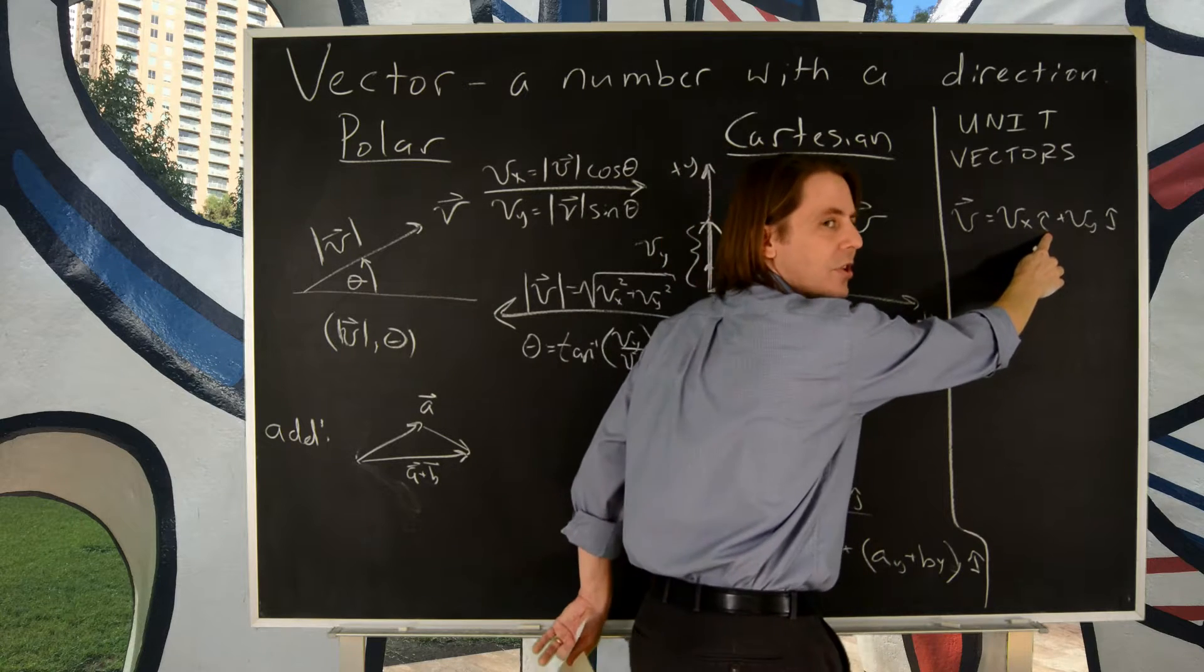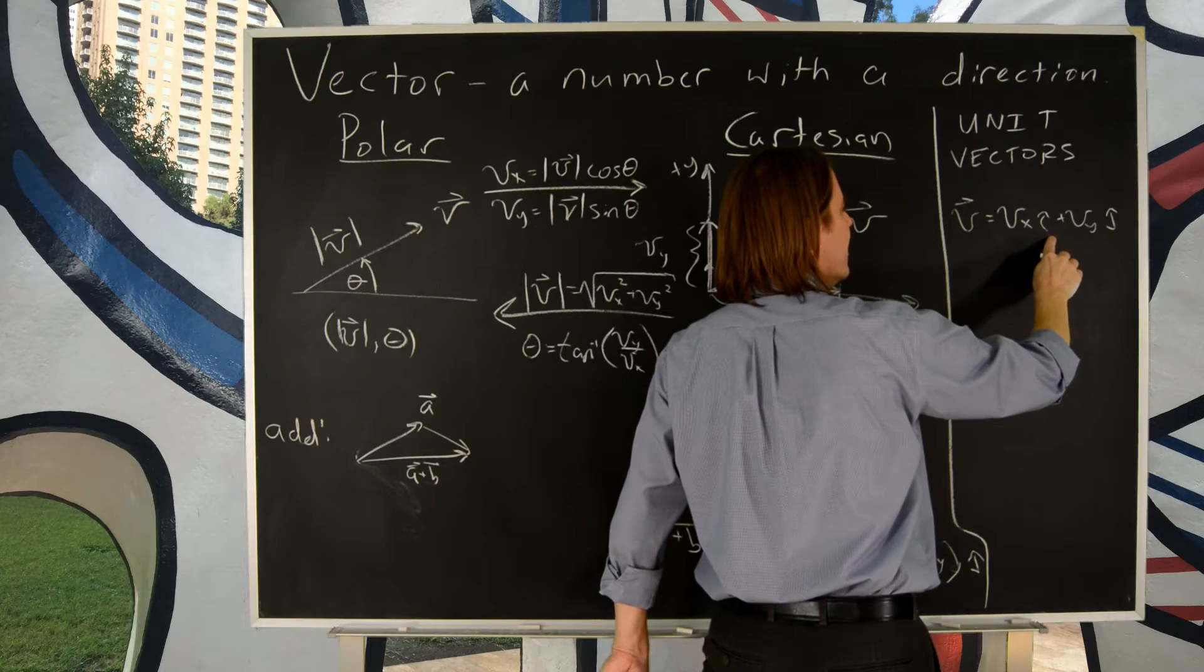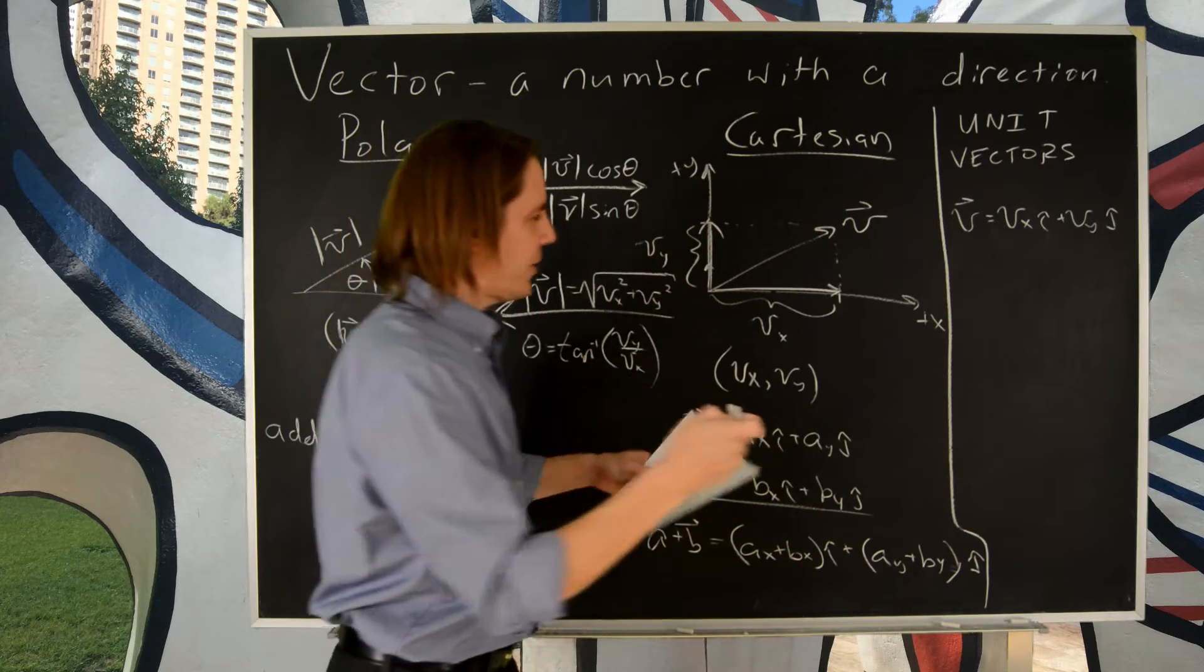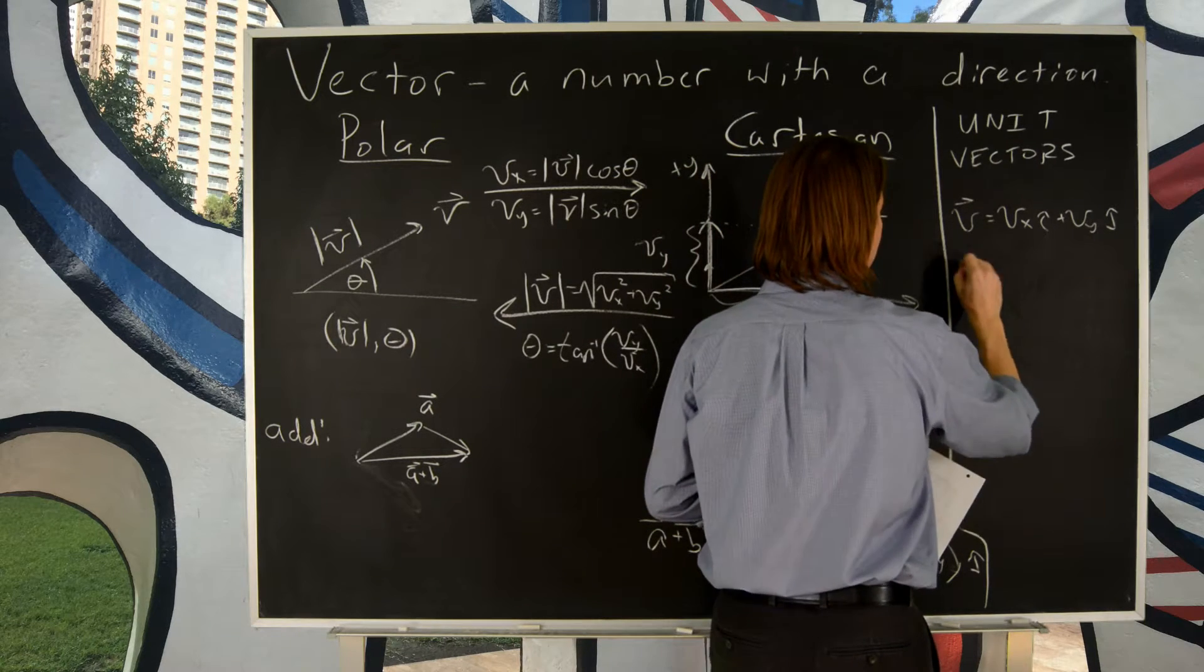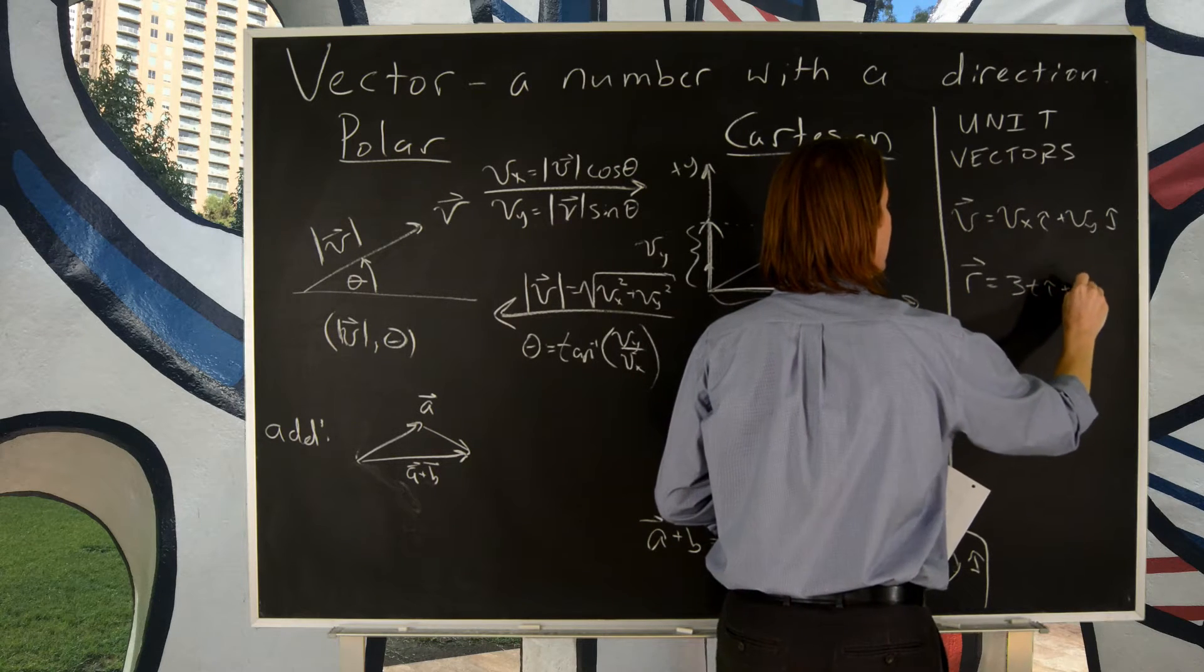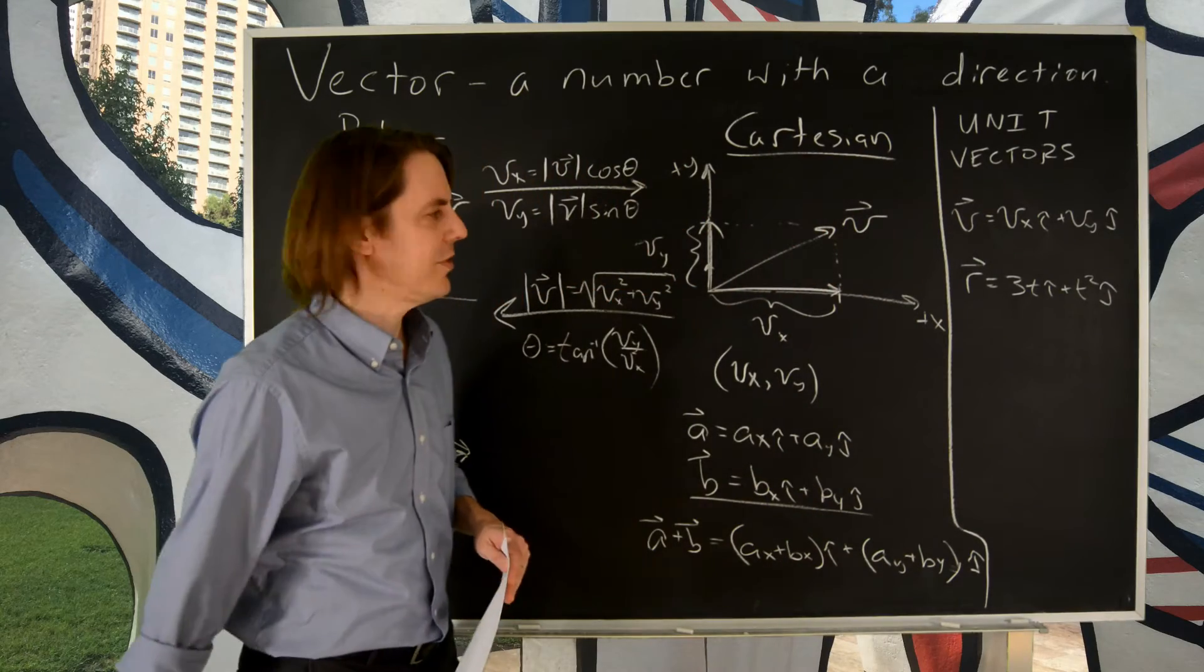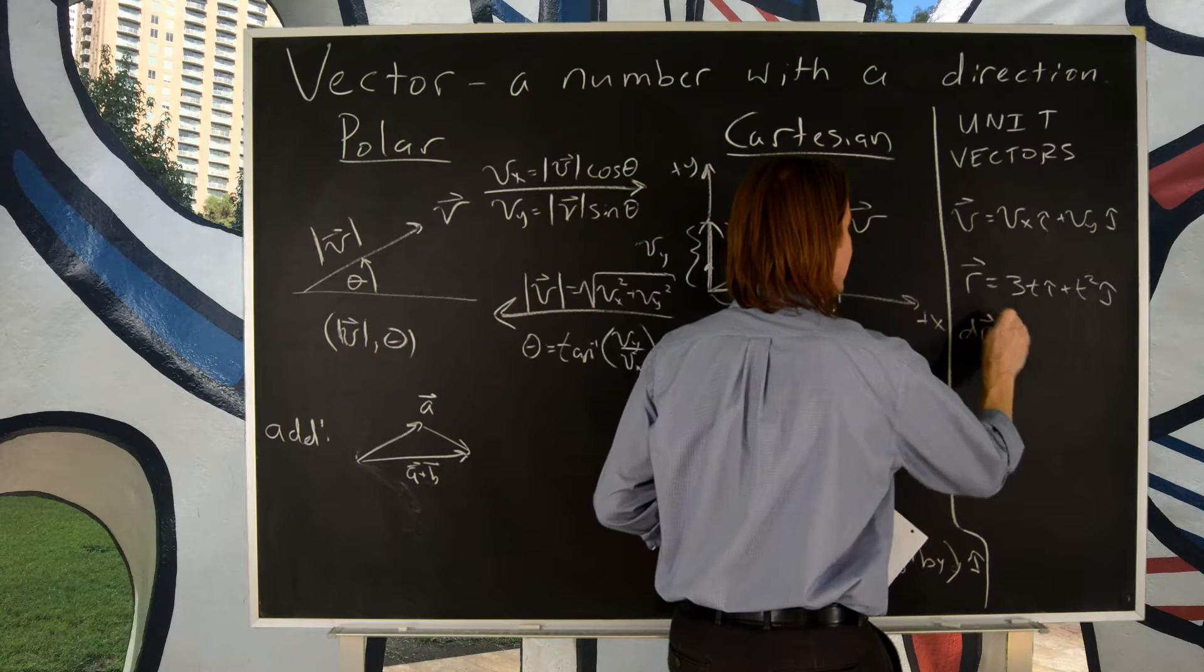Often when we write something as a constant, we like to put it out front. But unit vectors, we usually put in the back. Okay? So if, say, I had the vector, or let's say R, we usually think of a position vector like that. R is 3T i hat plus T squared j hat, for some reason. I'll tell you, that's an expression that you're dealing with. And you wanted V, you would take the derivative. We'll be getting to this in a minute.